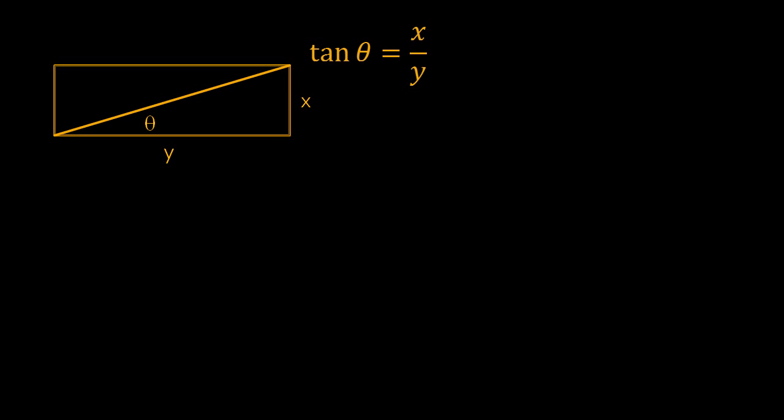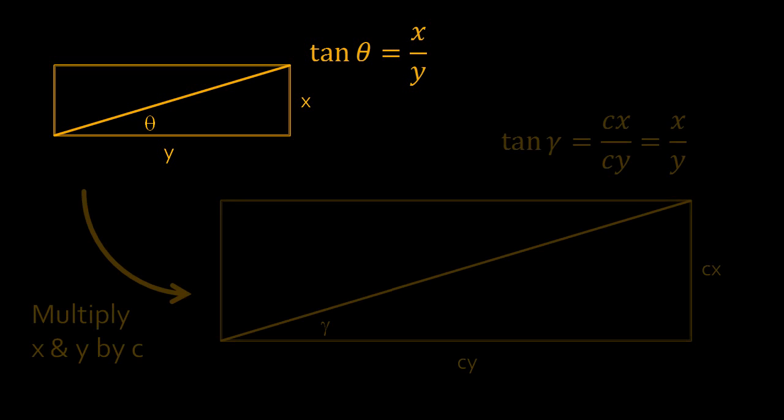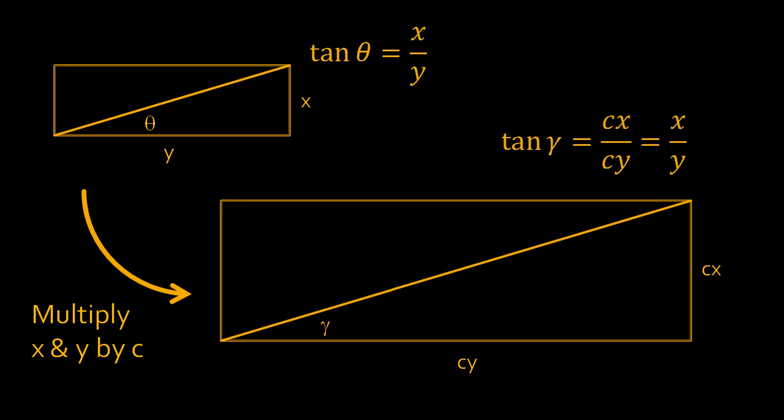Apparently, René has never heard of proportional rectangles. Regardless of what scalar you multiply the length and the width of a rectangle by, that scalar drops out when you take the ratio of the sides. And the diagonals of proportional rectangles always have congruent angles to the respective sides.